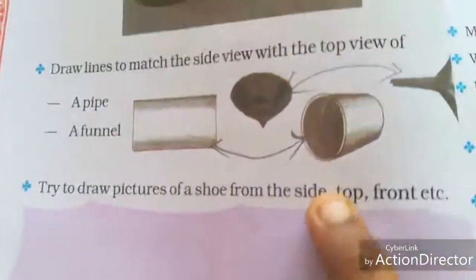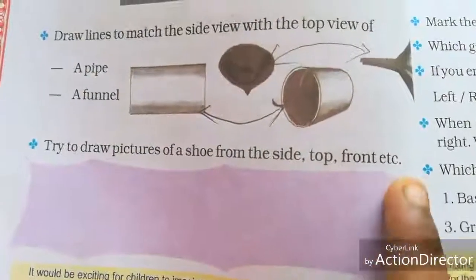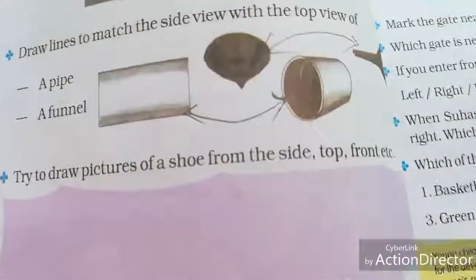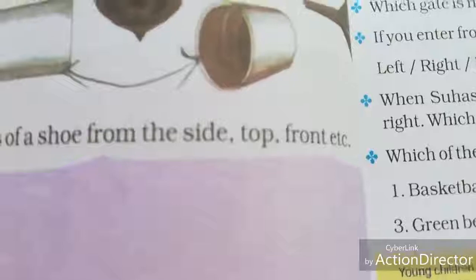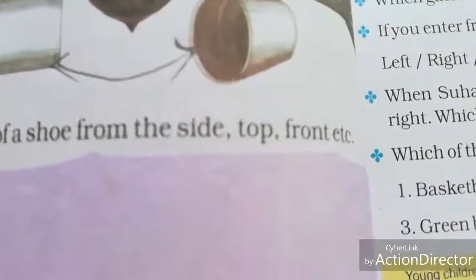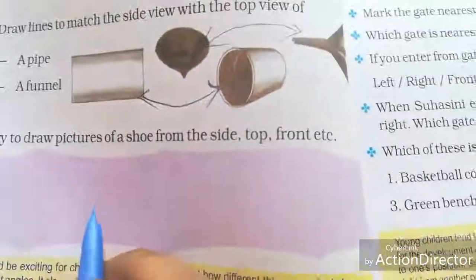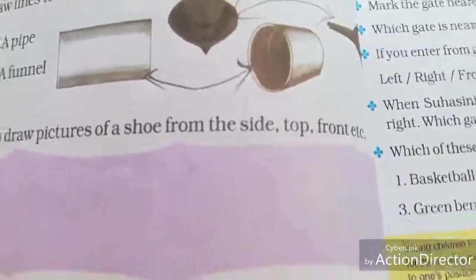Try to draw pictures of a shoe from the side, top, front, etc. Now take your shoe and observe the different types of view. Look at the shoe from side, top, front, and back, and draw it here. I hope you understood this lesson. Thank you, students. Peace.